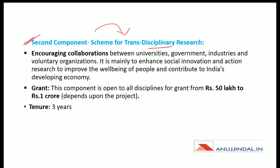The second component is the Scheme for Transdisciplinary Research. It will encourage collaborations between universities, government, industries, and voluntary organizations. It is mainly to enhance social innovation and action research to improve the well-being of people and contribute to India's economy. Under this component, the grant is from rupees 50 lakh to rupees 1 crore and the tenure is 3 years.